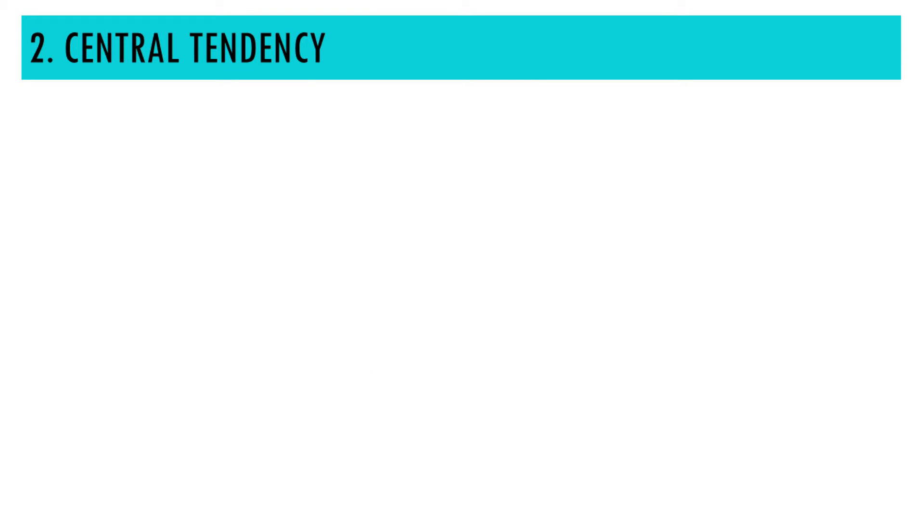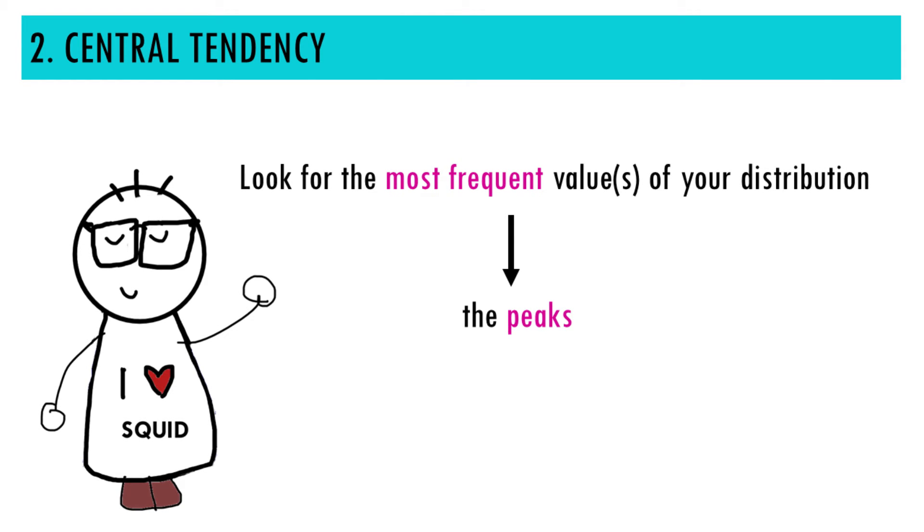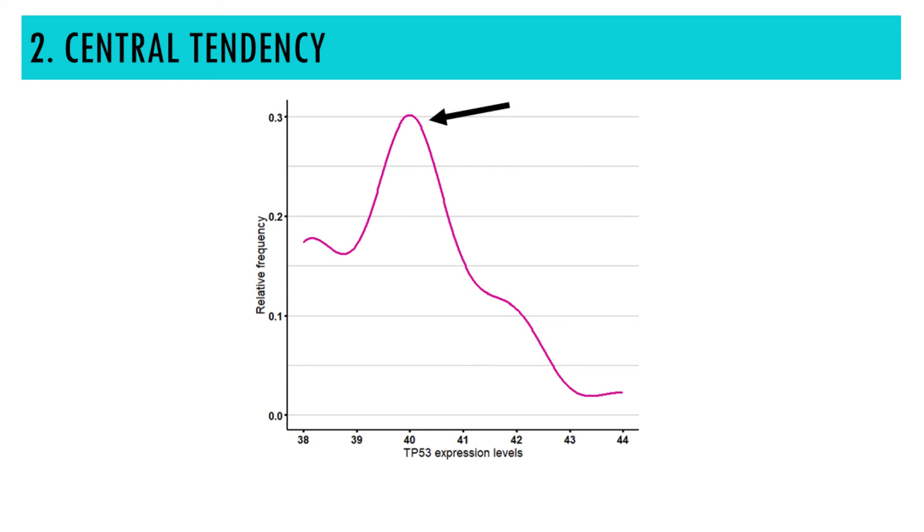Second point to consider is the central tendency. The central tendency of a distribution is just a fancy way of saying the mode, or the most frequent value. And we know already that this is represented by the peak, or peaks, in our density distribution.